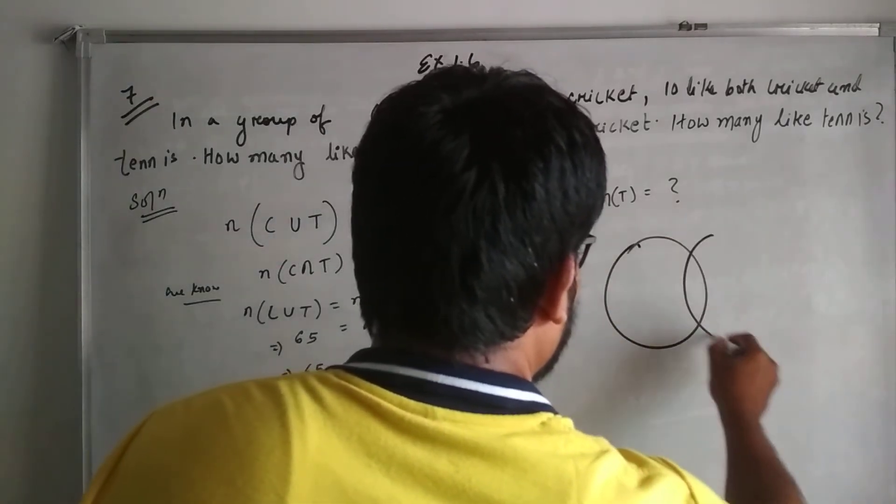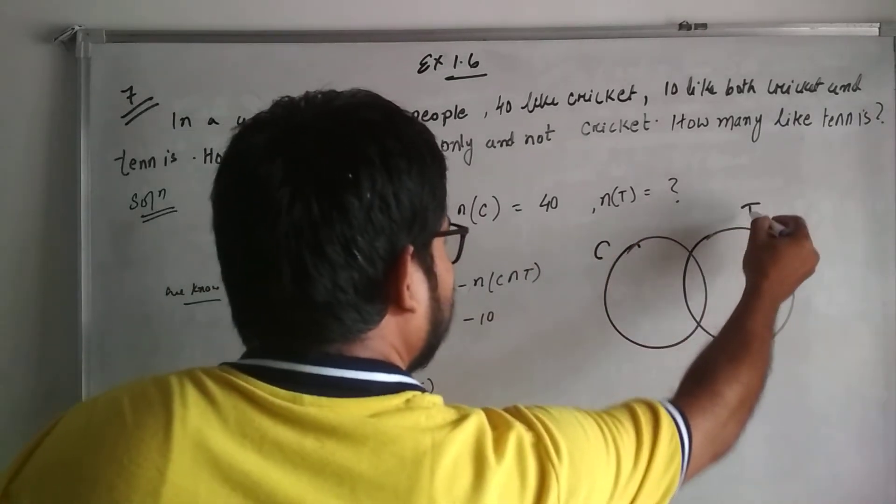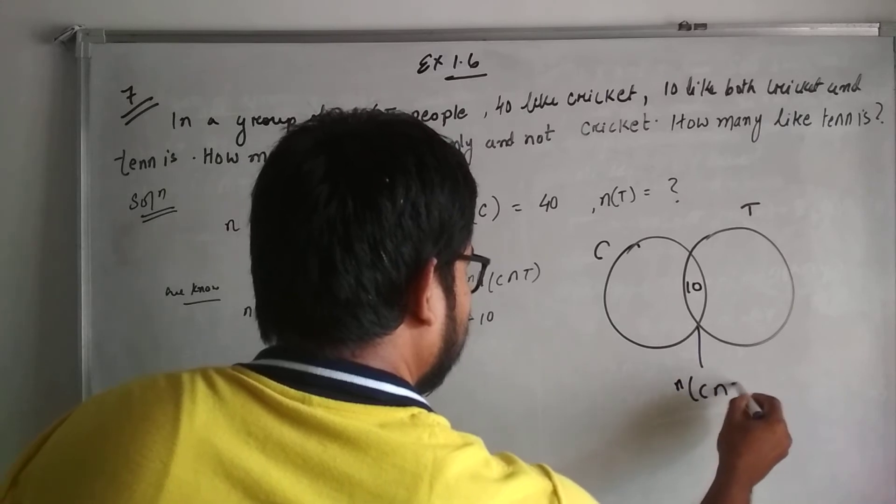I am drawing a Venn diagram, listen carefully. This is one of the important parts. This is cricket, this is tennis. 10 people are in the intersection, n(C∩T).